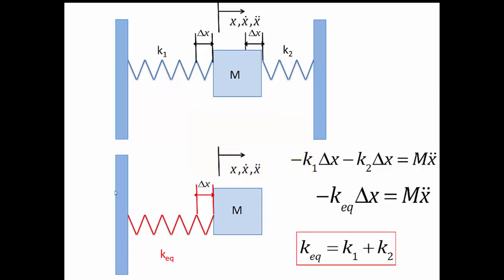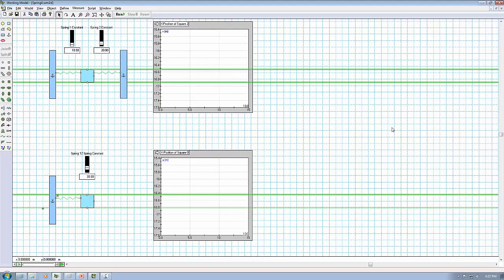To test if our analysis is true, we're going to build these two systems and run the simulation as what we did just now. Now we're going to do the simulation in working model. Again, these two bars control the spring constant of each of the fixed spring, and this bar controls the equivalent spring constant.